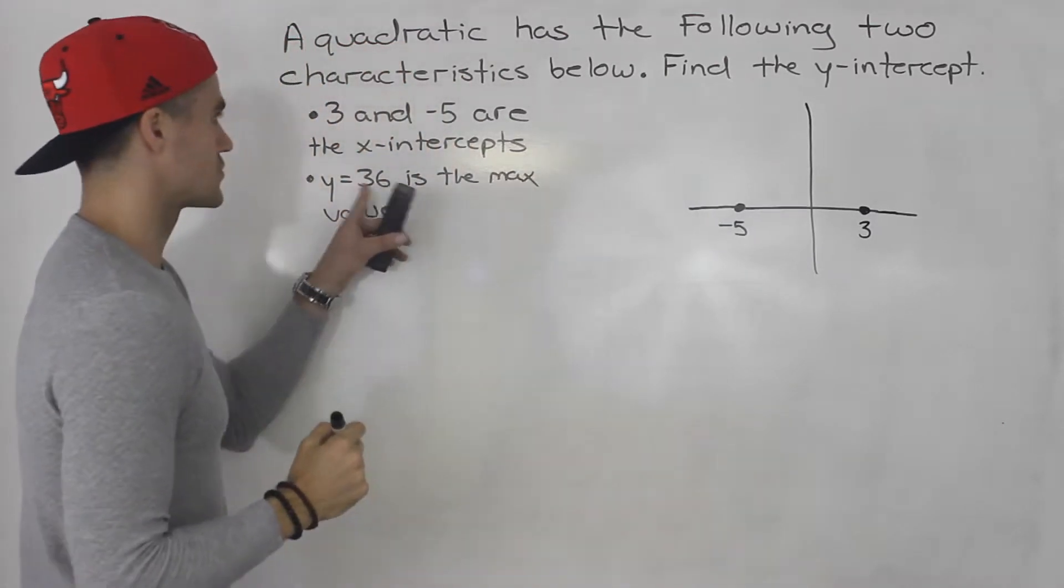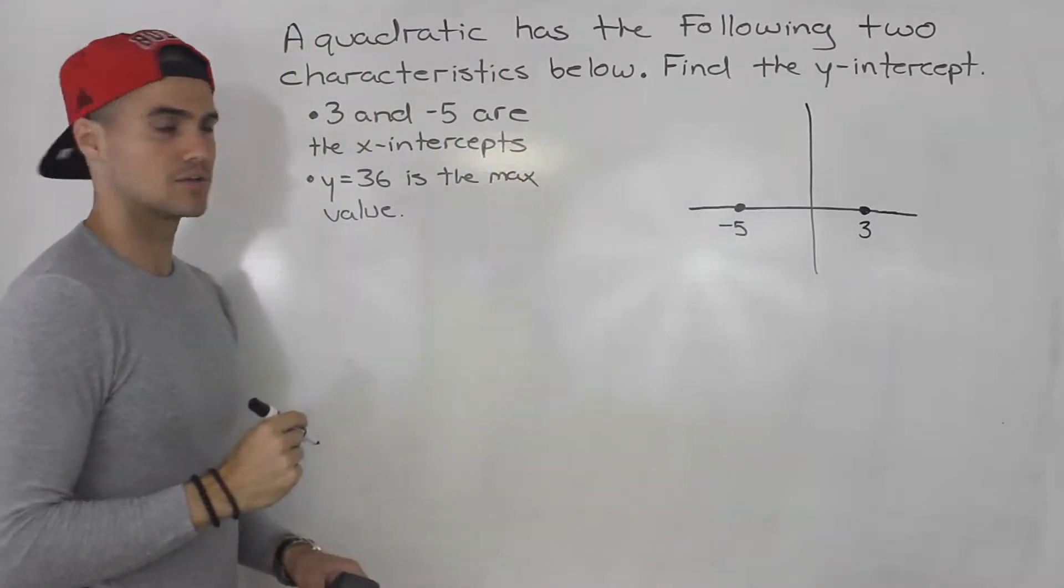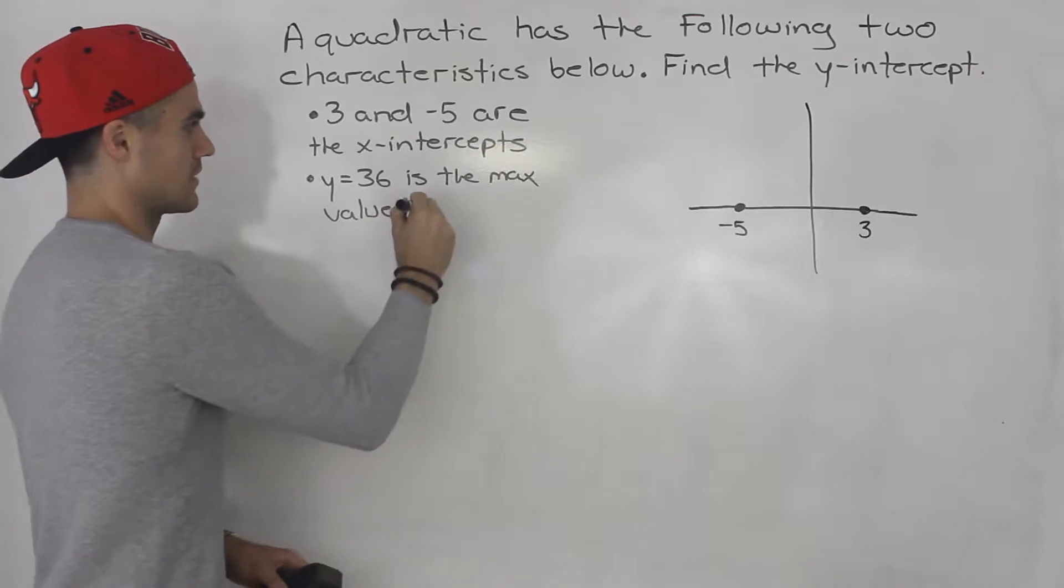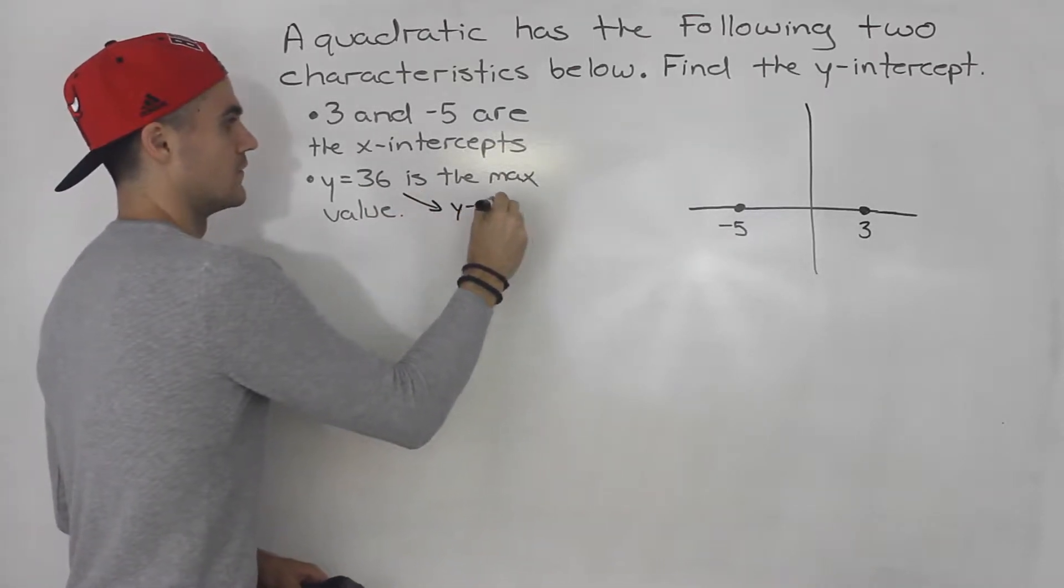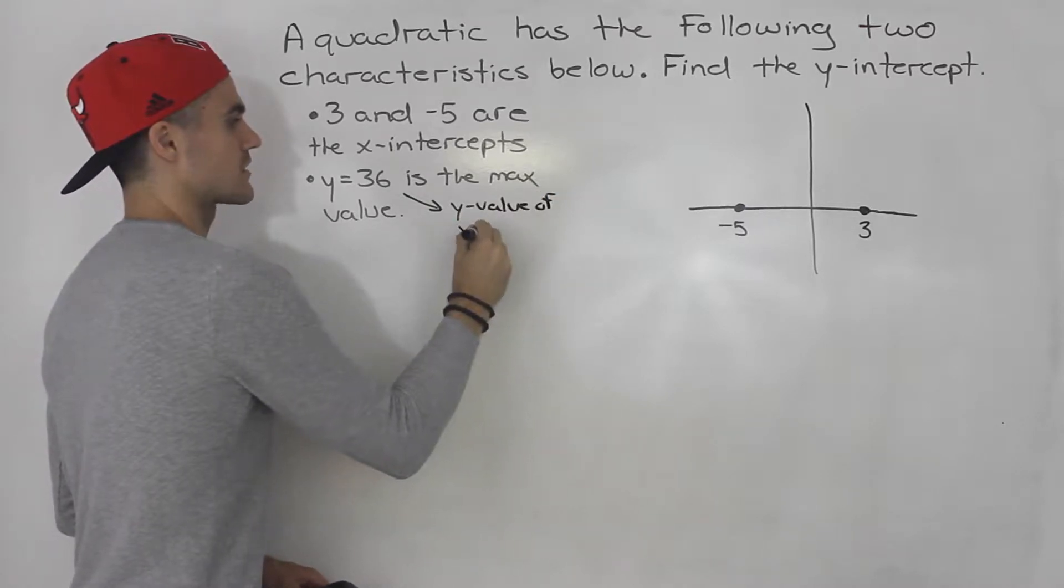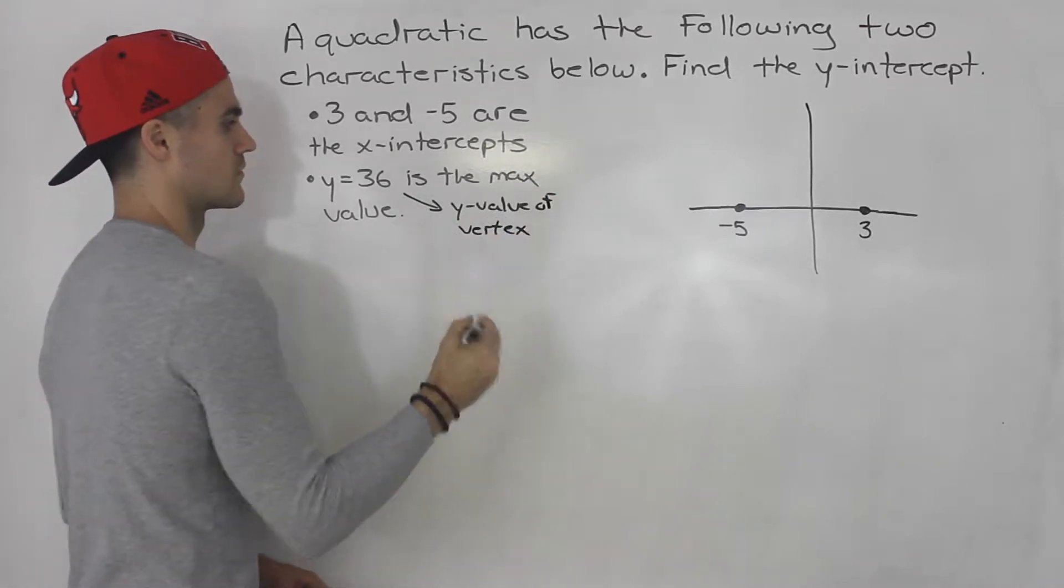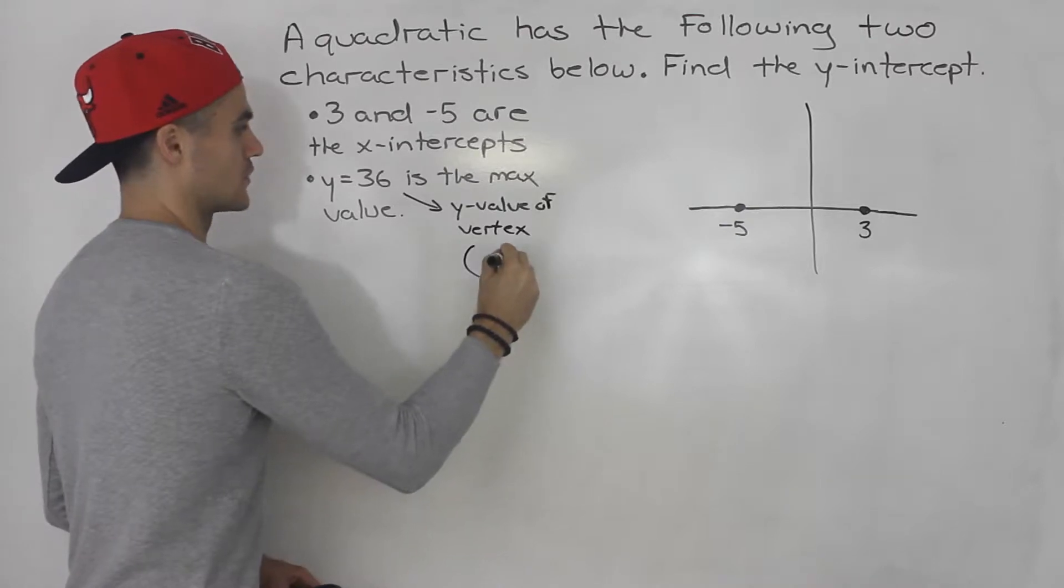And then we're told y equals 36 is the max value. So, what does this mean here? That means that this is the y-value of the vertex. The y-value of the vertex.